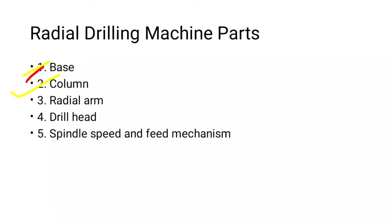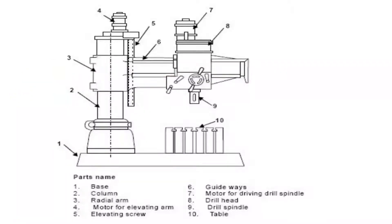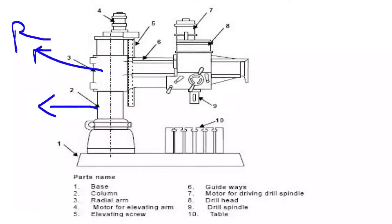The next part is the column. It is a cylindrical casting which is mounted vertically at one end of the base. The column also supports the radial arm, which may slide up and down on its face. On the top of the column, an electric motor is mounted, which imparts vertical adjustment of the arm by rotating a screw passing through the nut attached to the arm.